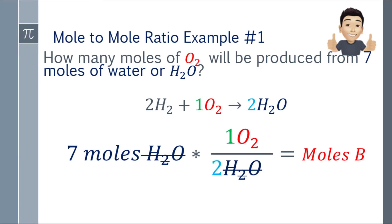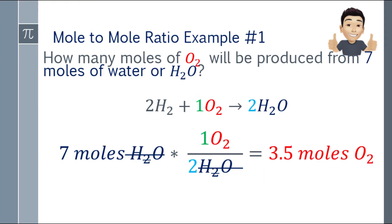Doing the math: 7 times 1 equals 7, divided by 2 gives 3.5. So the answer is 3.5 moles of O2. For every 7 moles of water, there will be 3.5 moles of O2 produced.